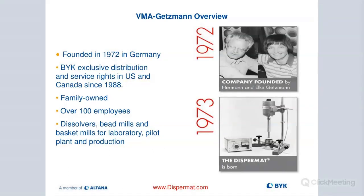VMA Getzman is a German company, founded in 1972 by Herman and Elke Getzman. Big Gardner has had the exclusive distribution rights for the product line in North America since 1988. Big actually used that equipment for quite a bit longer throughout the laboratory space in Europe and the U.S. Some customers came in and saw the equipment run at the Big USA facility, and they wanted to purchase it — and that was the starting point, when Dr. Peter decided to include it in the product line of their big instruments group.